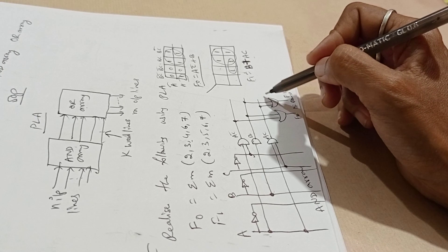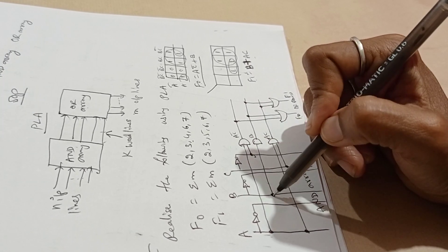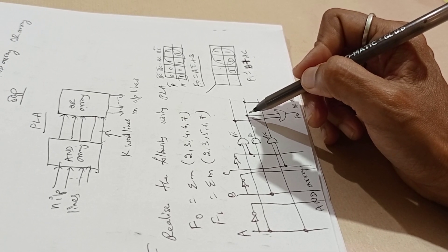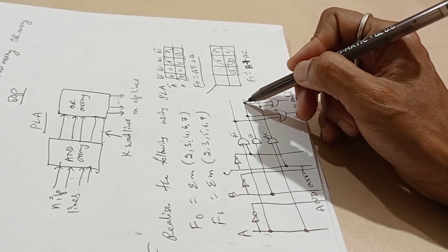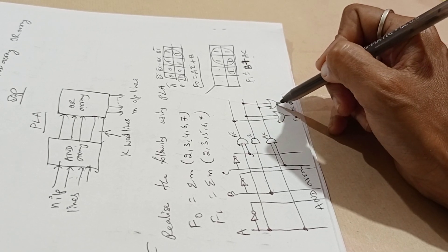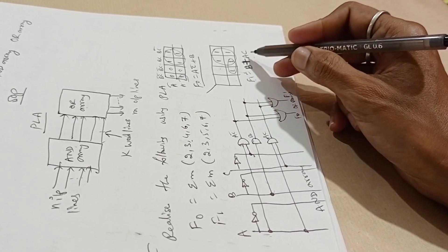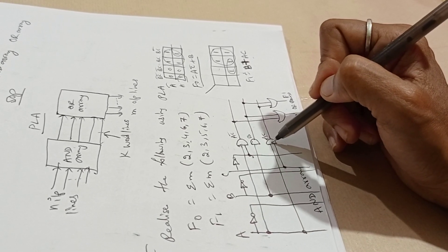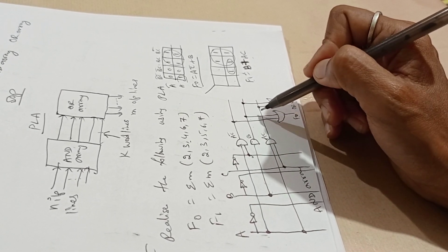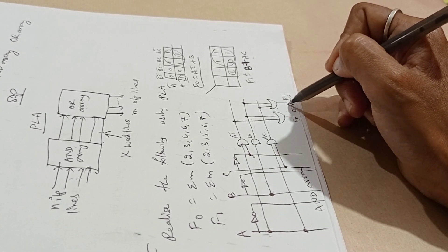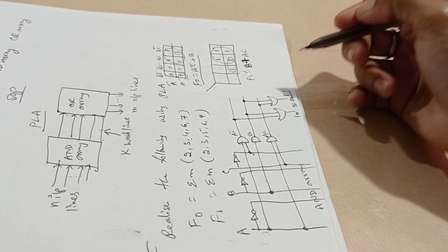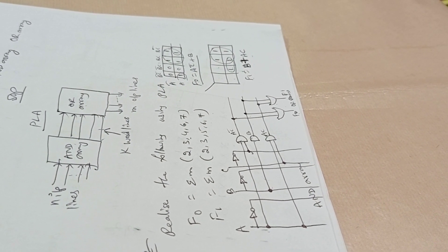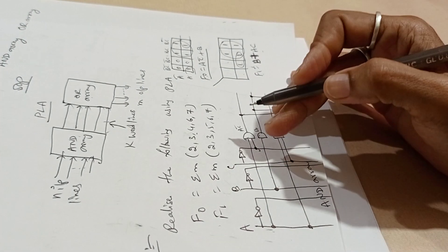Now we will see F1. B is already existing, so no need to take one more AND array. Directly connect from this output to the OR gate. For AC, take a connection from A and from C using AND gate and connect it to the OR gate. This is F1. This is how to design PLA for a given expression.